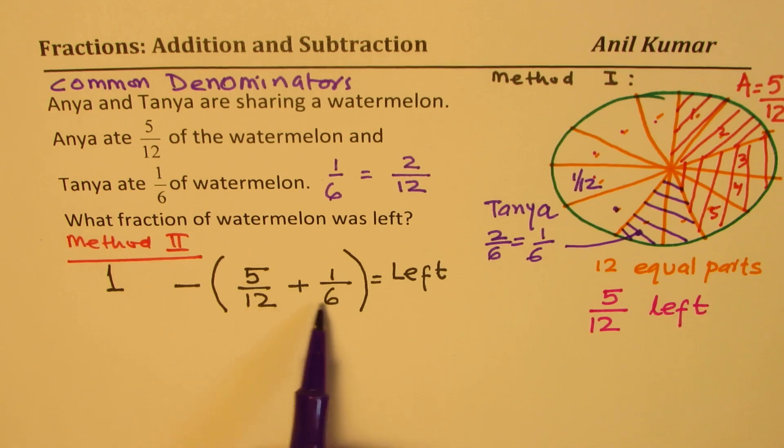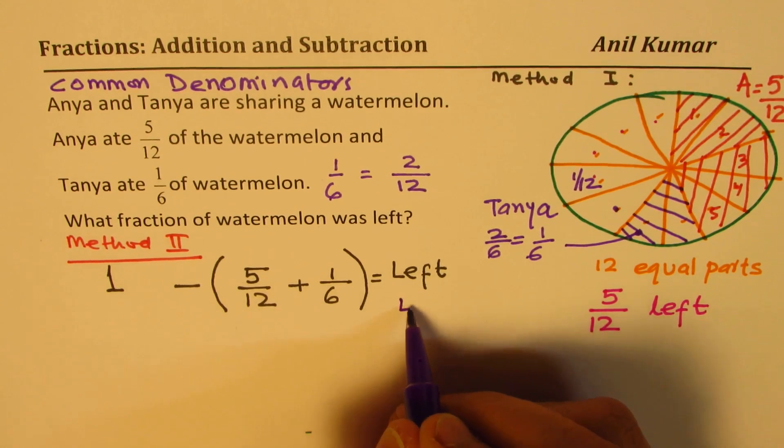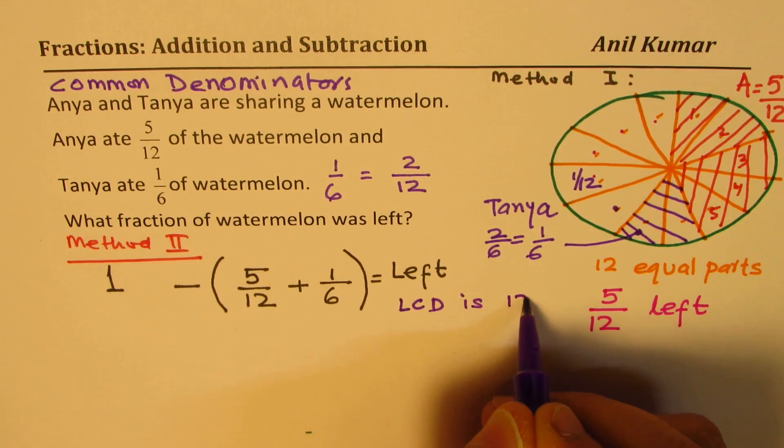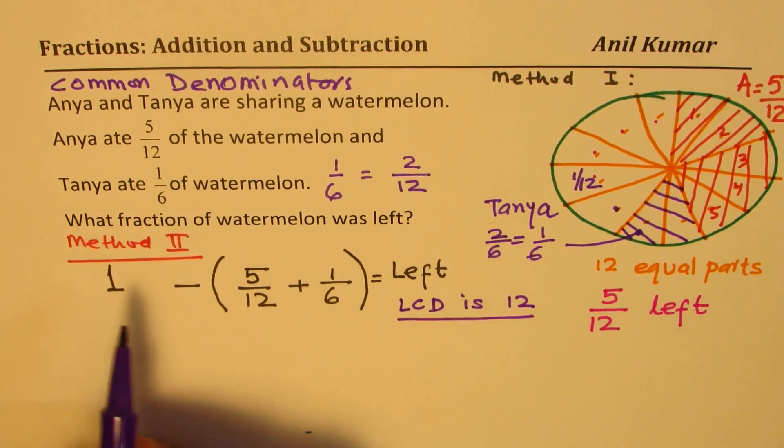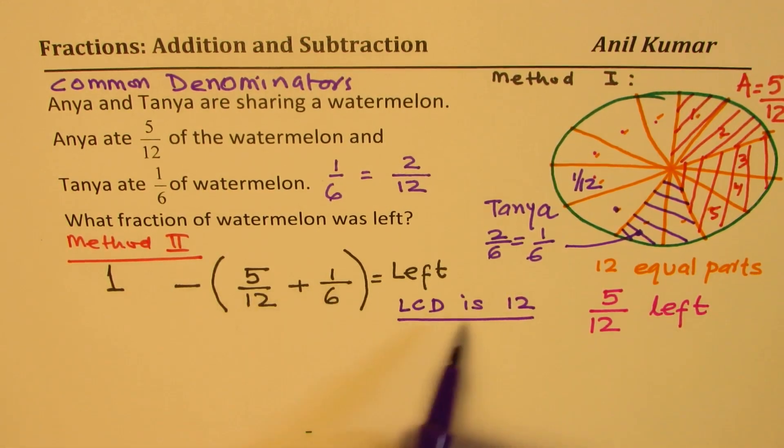So our common denominator is 12. We will say lowest common denominator is 12. So we have to write each number with denominator of 12.